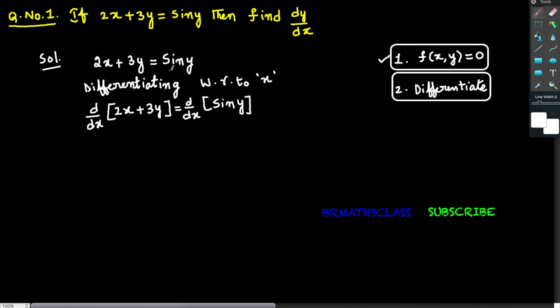As I am differentiating with respect to x, I written dy by dx on both sides. It is nothing but we are differentiating complete given equation with respect to x. From basic differentiation, dy by dx of 2x plus 3y is dy by dx of 2x plus dy by dx of 3y equal to dy by dx of sin y.